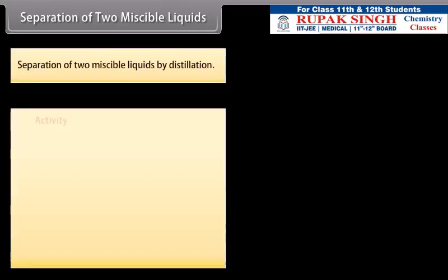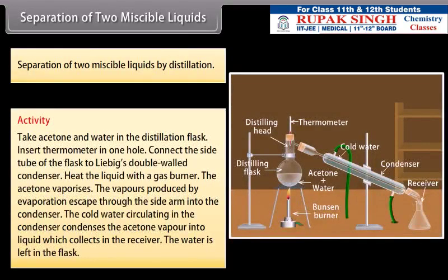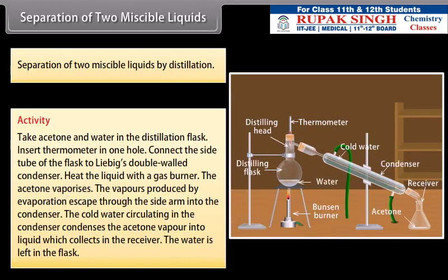Separation of two miscible liquids can be done by distillation. Take acetone and water in the distillation flask. Insert a thermometer in one hole and connect the side tube of the flask to a Liebig double-walled condenser. Heat the liquid with a gas burner — the acetone vaporizes, and the vapors escape through the side arm into the condenser. The cold water circulating in the condenser condenses the acetone vapor into liquid which collects in the receiver, while the water is left in the flask.